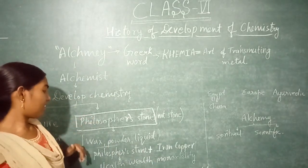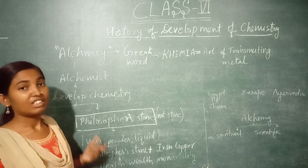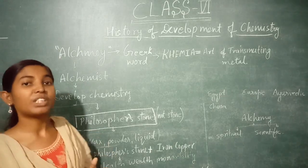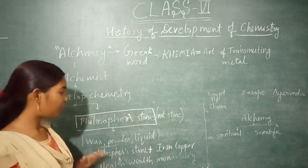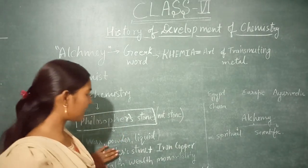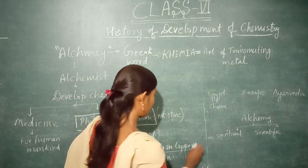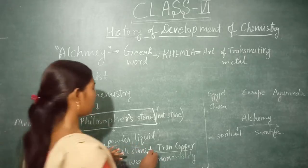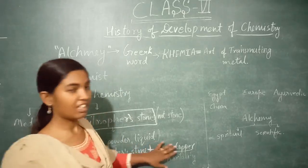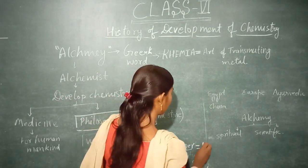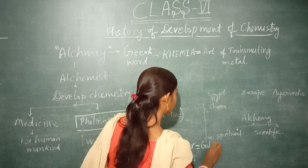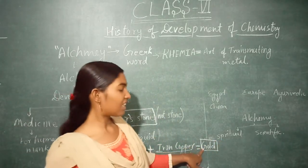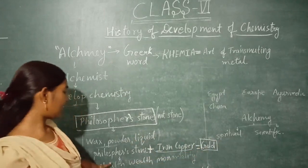So alchemists were trying to find this philosopher's stone. They tried and tried but did not find it. However, they believed that when they mixed that magical substance — the philosopher's stone — with iron and copper, it would turn into gold.